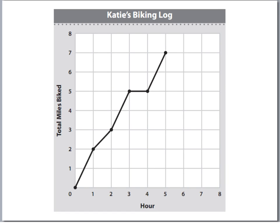Here we have a line graph. We have Katie keeping a biking log. She basically wanted to show how many miles she biked over a period of time. We have miles over here, and then down here we have the time. You'll notice the increments are counting by hours, and then we're going up the total number of miles.